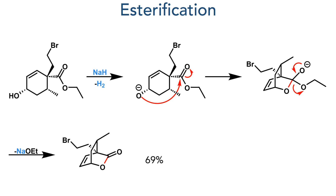This then took part in an intramolecular esterification. The alcohol is deprotonated by sodium hydride, which eliminates hydrogen gas, and the alkoxide then undergoes intramolecular addition into the ester. This eliminates ethoxide, forming the target bicyclic lactone in a 69% yield.